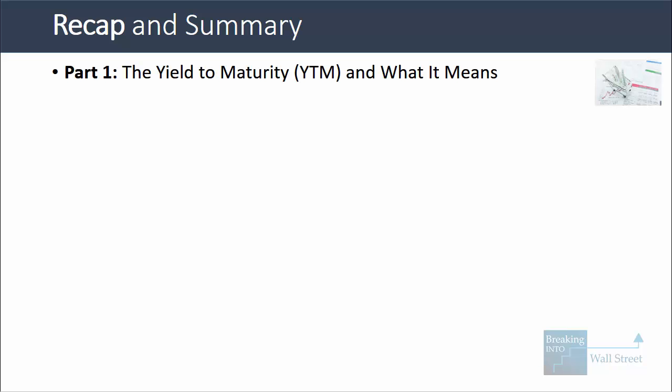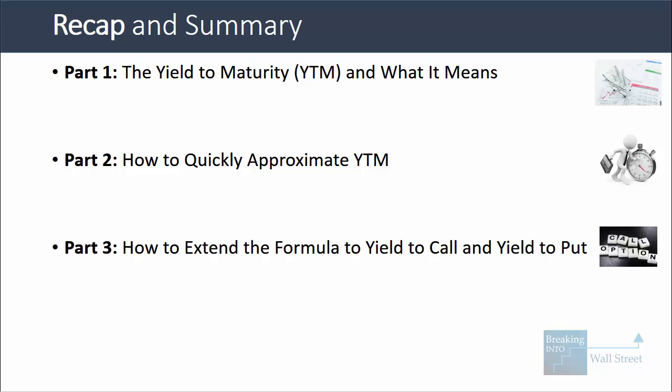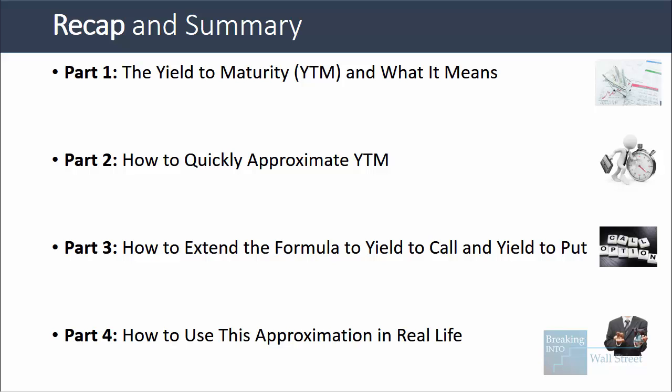Let's do a quick recap. In part one, I covered the yield to maturity — it's essentially the IRR on a bond when you buy it at market price, hold it to maturity, and the company makes all payments on time. In part two, you learned the quick approximation: annual interest plus capital gain or loss per year, divided by the average price. In part three, I extended that to yield to call and yield to put using redemption prices. And in part four, we applied it to real-life bond investing decisions to quickly screen opportunities before doing deeper analysis.